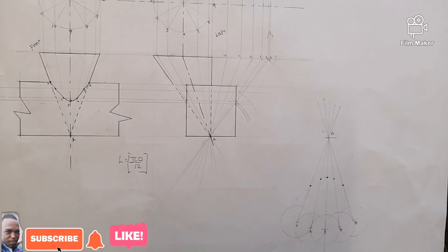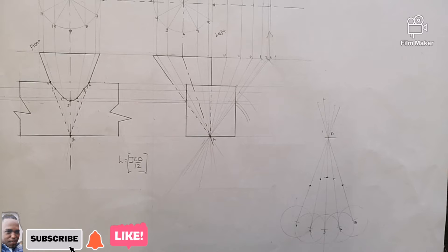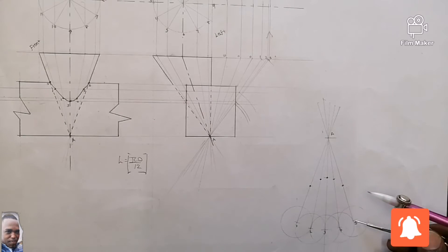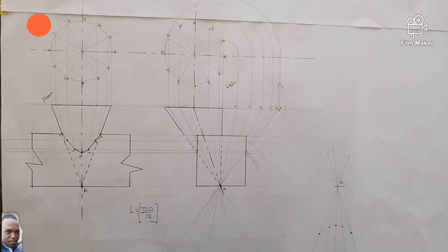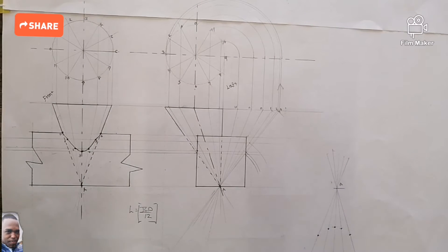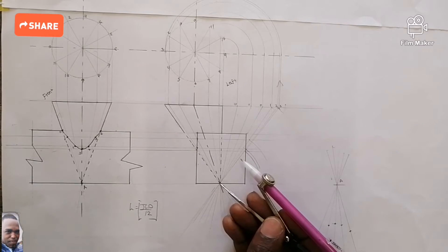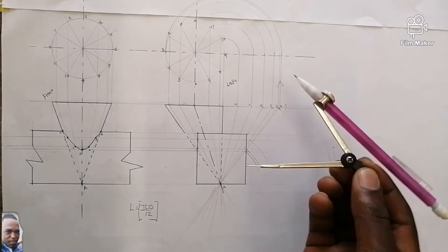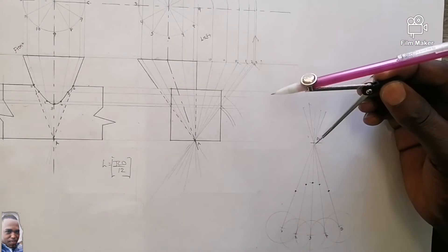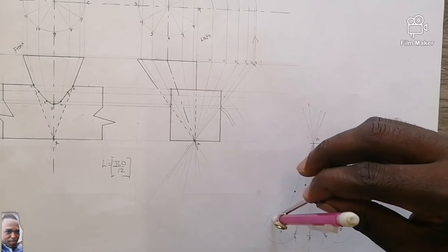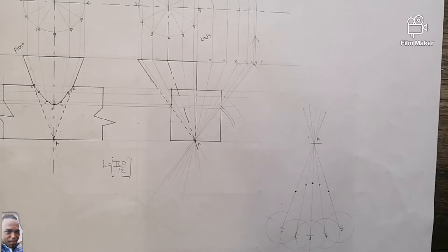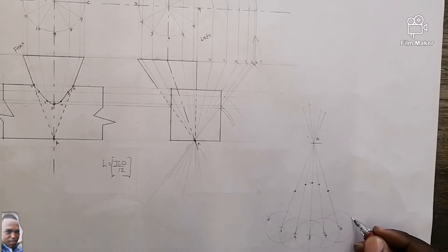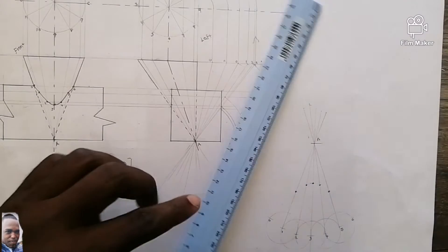Welcome back to Part 2. Let's continue — we've just gotten point 1 and point 5 since they are on the same line. Go back to your left view to get point zero. Place your compass at the apex point of your left view, further extend it to point zero. Without shifting or disturbing it, come to the development site, place it at your apex, then mark right there. This point is going to be point zero, in the same line with point six. Now join them.